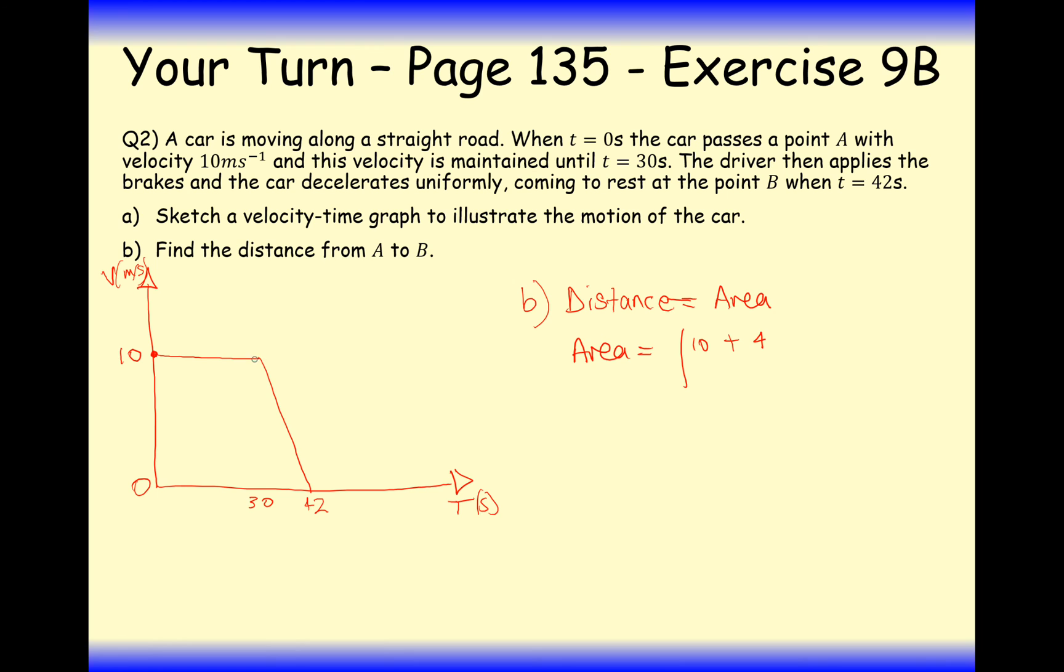30 plus the 42 on the base, divide that by 2, and times then that by the height of this graph, which is 10. So what we're going to get is 72 times 10 divided by 2. So we're there going to get 360. What's the units? Well, it's in meters per second, so we're in meters here. Alright then, so that's the answer to this question here then.